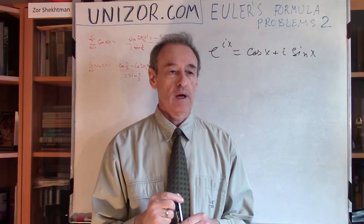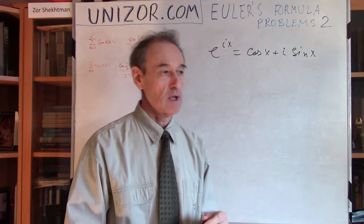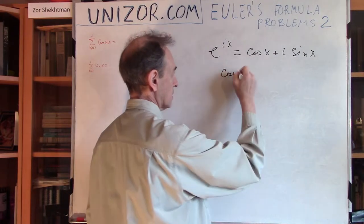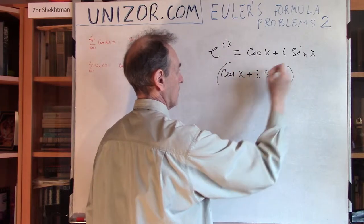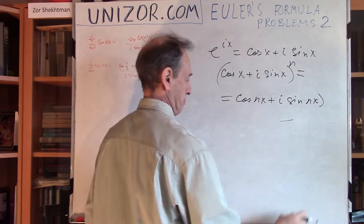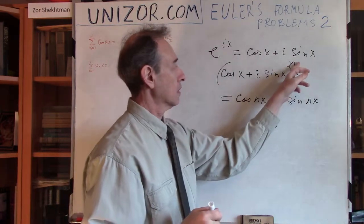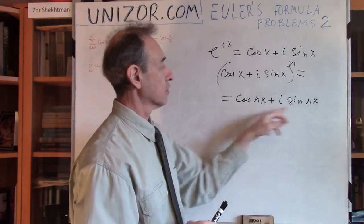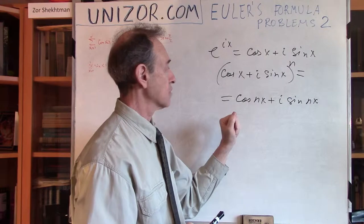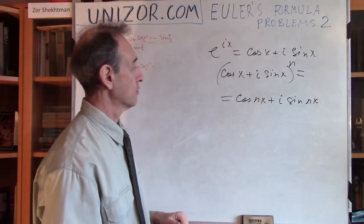We have spent some time explaining Euler's formula for trigonometric representation of the complex exponent. Just by itself this formula looks quite amazing. This represents a polar representation of complex numbers, and the polar representation is very convenient. Raising a complex number to a certain power is equivalent to a rotation — you are increasing the argument of the complex number in polar representation by the factor equal to the power.